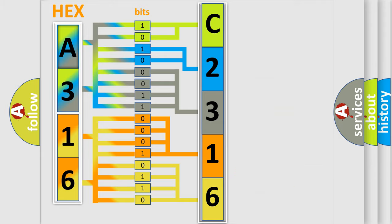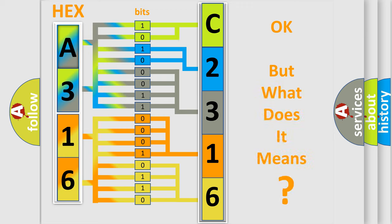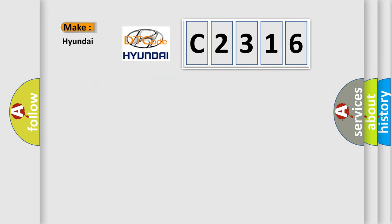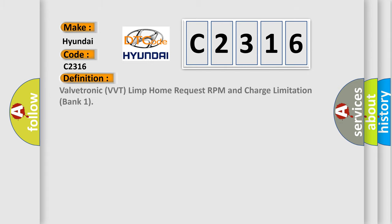We now know how the diagnostic tool translates the received information into a more comprehensible format. The number itself does not make sense if we cannot assign information about what it actually expresses. So what does the Diagnostic Trouble Code C2316 interpret specifically for Hyundai car manufacturers? The basic definition is: Valvetronic VVT Limp Home Request RPM and Charge Limitation Bank 1.